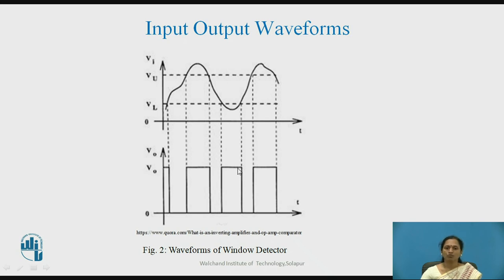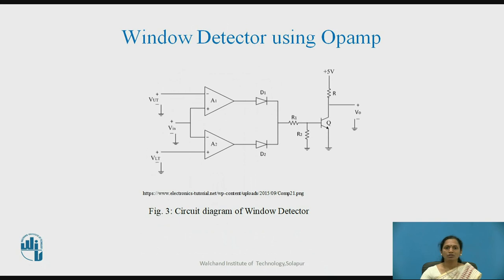If you add one more component — a transistor — to the available comparator circuit, then when input voltage is within the window, the output is logic 0, the transistor will not conduct, and therefore you will get V0 equal to VCC, making the output logic high. So we can change the output polarity, and you can detect the window by observing logic 1 at the output rather than logic 0. We can see the transfer characteristics for this circuit shown in Figure 3.